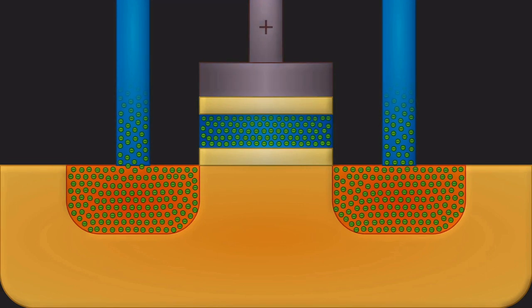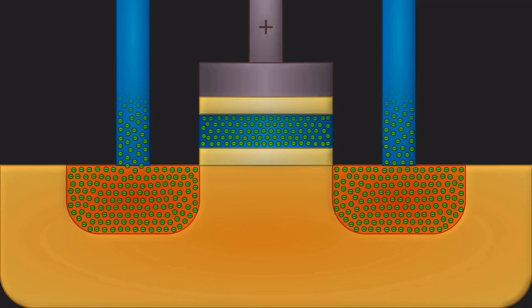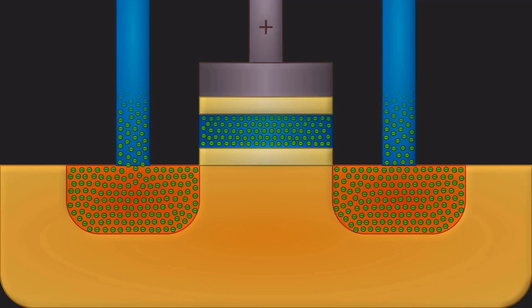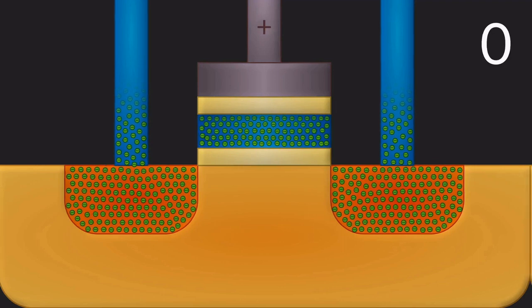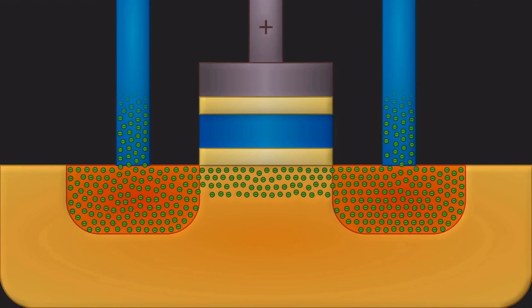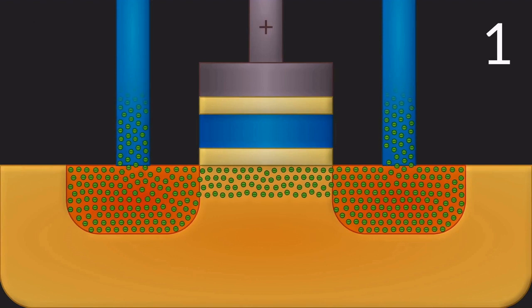You can read out the stored value by applying a small voltage. If there are electrons on the floating gate, no current flows, so that's a zero. If there are not electrons, then current does flow and that's a one.